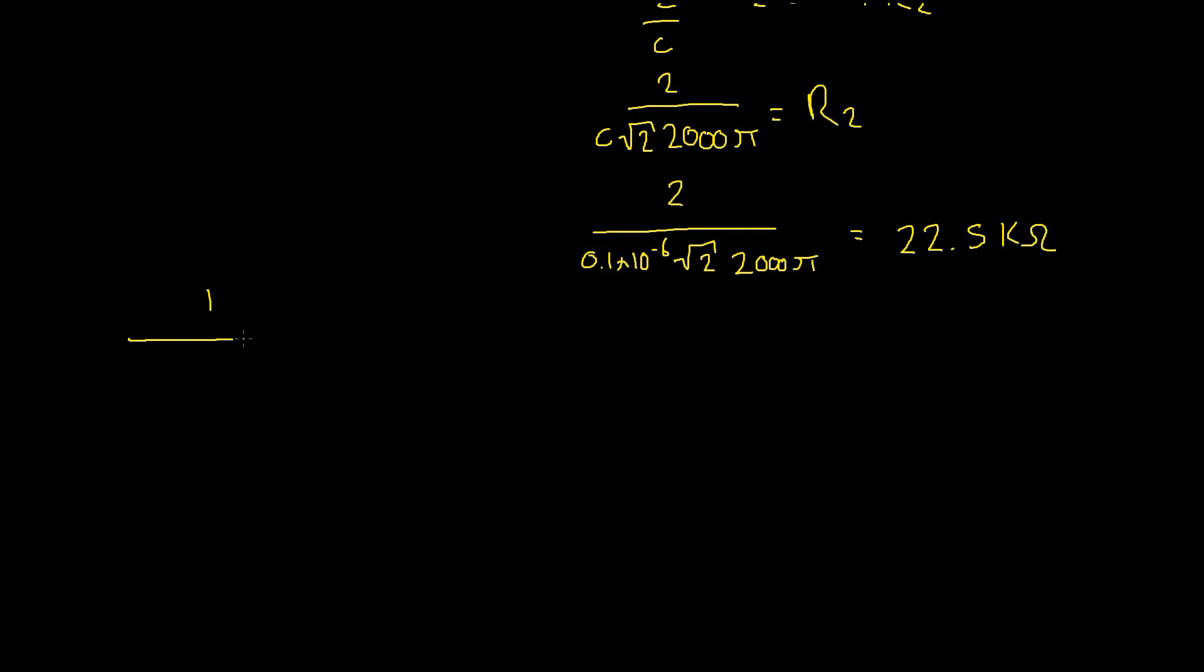1 divided by 0.1 times 10 to the power of negative 6 squared as we have 2 C's times our 22.5 kilo ohm times our resistor R1 is equal to,